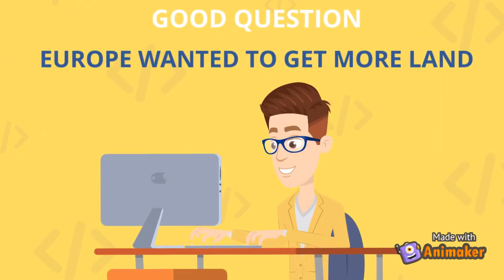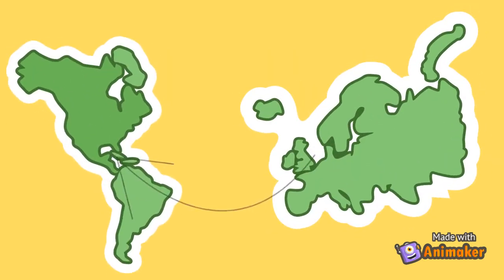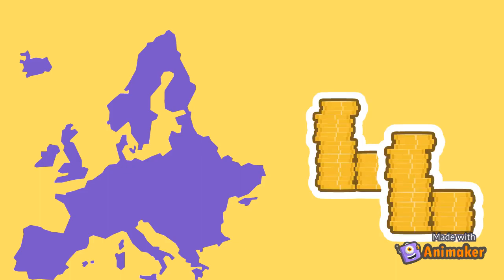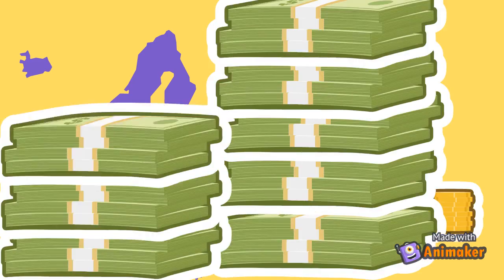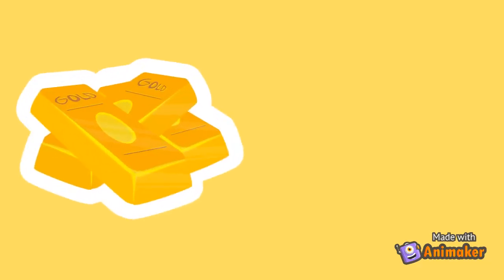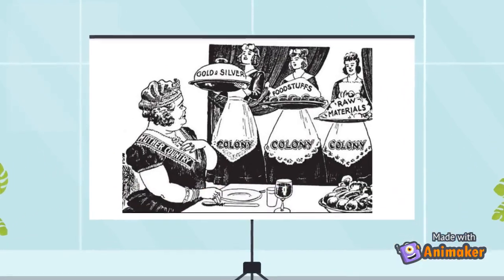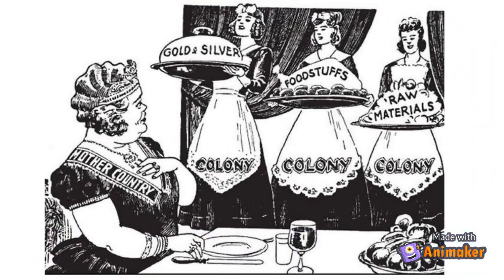Europe wanted to get more land so they could stop giving other countries money and keep it for themselves while getting the supplies they needed. This was believed to be beneficial for the country so they could control who got the money. This was important so a country could supply its own gold and silver. The overseas trade would enrich the mainland by serving as a market unto itself.